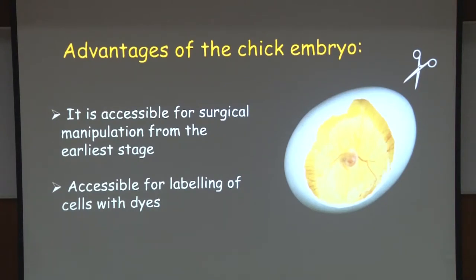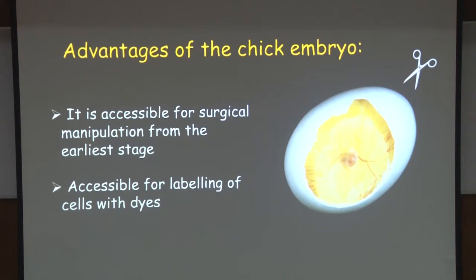Why the chick embryo? You do not even need a microscope — you can see the entire process of development by simply cutting a window in the egg. You take plastic tape, stick it on top of the shell, cut a neat round window, remove the shell, and put transparent tape on it to prevent dehydration. You put it back into the incubator, take it out anytime to look at it, and it continues to develop into the full chick. It is accessible from day zero, unlike the mouse which develops inside the mother.